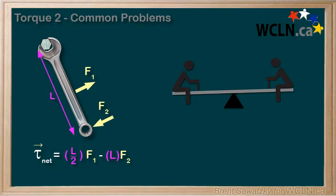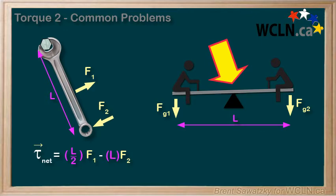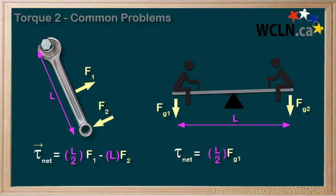Similarly, let's take a look at a teeter-totter situation. Similar in that there's a fairly obvious pivot point here, and we can see that FG1 is causing a counterclockwise torque, and it's applied at half the length of the teeter-totter. That's its radius of motion. So it contributes a positive L over 2 times FG1.